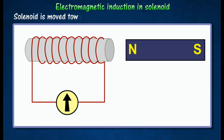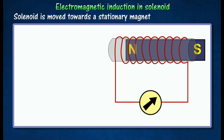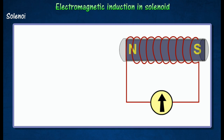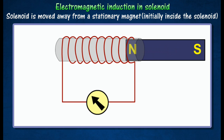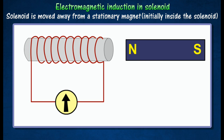When a solenoid is moved towards a stationary magnet, the galvanometer needle is deflected momentarily, indicating that a current is induced in the solenoid. If the solenoid is moved away from a stationary magnet, the galvanometer needle is deflected momentarily but in the opposite direction, indicating that an induced current flows through the solenoid in the opposite direction.